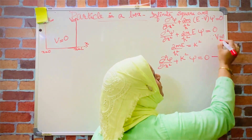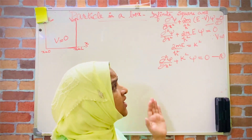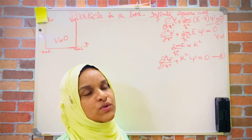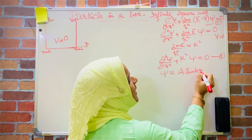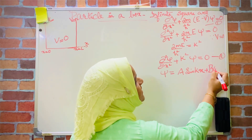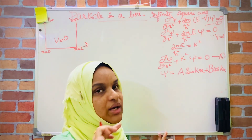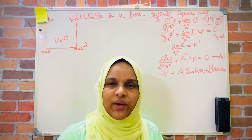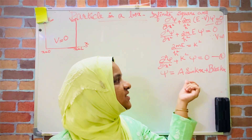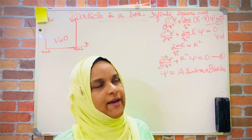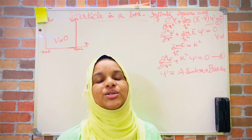For a second-order differential equation of this form, a possible solution is ψ = A sin(kx) + B cos(kx). This is the general solution of the equation ∂²ψ/∂x² + k²ψ = 0. Here, A and B are two unknown constants to be determined.